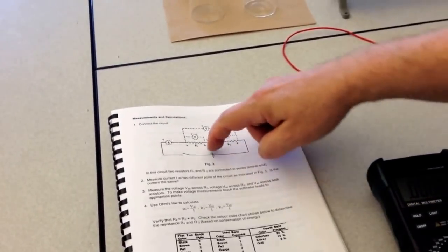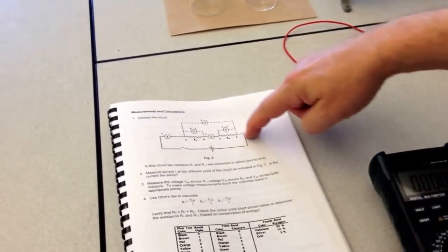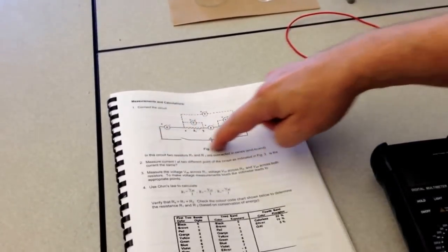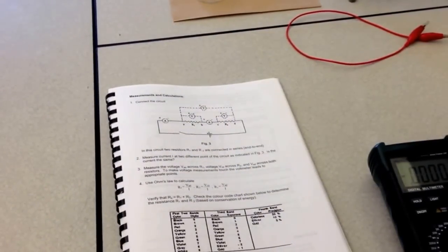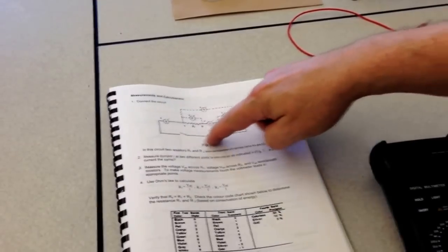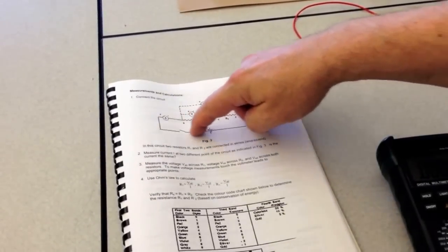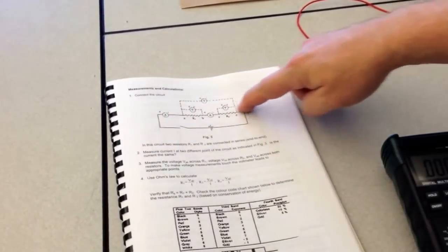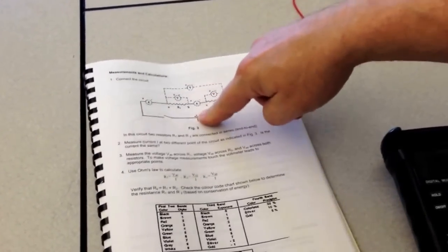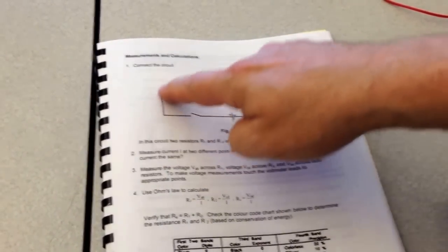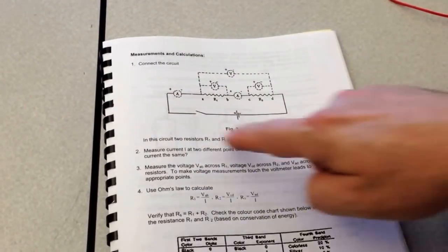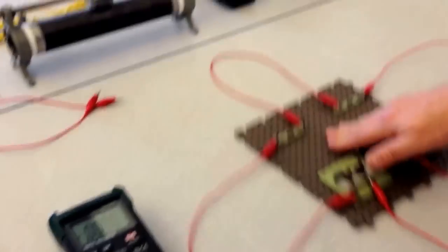Well, it will be the same. Why? Because current has only one path to flow in. And because of conservation of charge, if electrons come out of one end of the battery, the same number of electrons will have to come back to the other end of the battery. So the current flowing through the entire circuit should be the same. Let's quickly verify if that is, in fact, true.